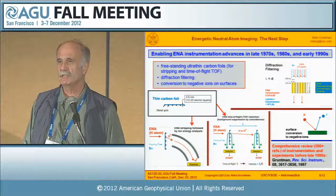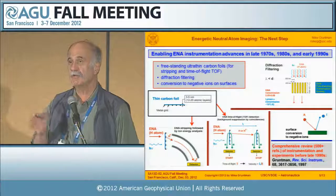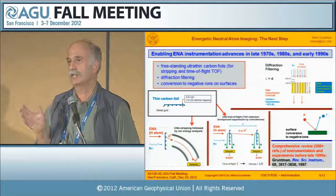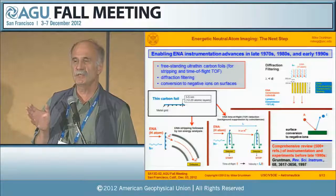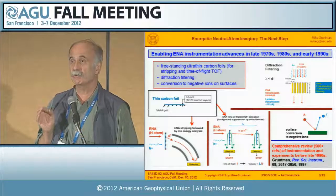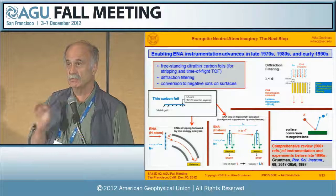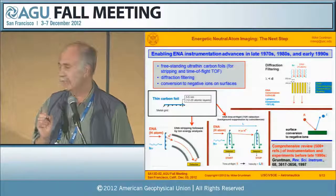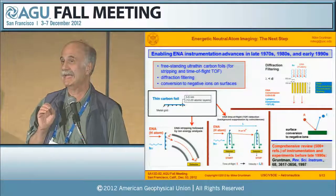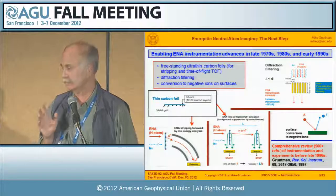Another technique that was developed is diffraction filtering. Basically, if you have a hole small enough — comparable to UV wavelengths — then the photons that create noise cannot pass through, but ENAs do go through. The third technique is conversion of incoming neutral atoms into negative ions on surfaces.